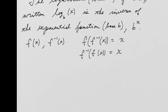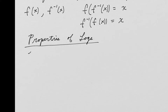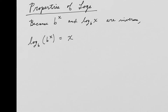Because of that, this gives us one of the first properties of logs. Since b to the x and log base b of x are inverses, log base b of b to the x equals x — they undo one another. Or vice versa: b raised to log base b of x also gives back x.